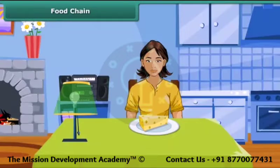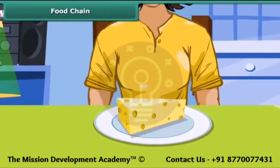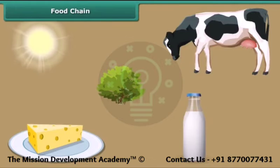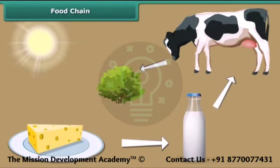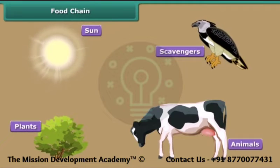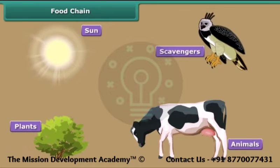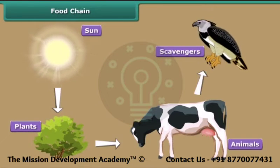It is breakfast time. Rhea is relishing a cheese cube. She decides to trace the cube back to the place from where it originated. The cheese cube comes from milk, and the milk from the cow. The cow eats plants. Plants produce their food with the help of sunlight. Rhea just traced the food chain. The food chain is an arrangement in which energy passes from one organism to another. The main constituents of the food chain are the sun, the plants, the animals, and the scavengers.